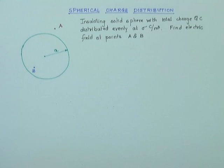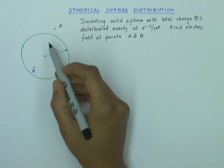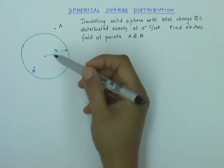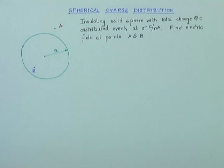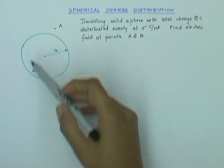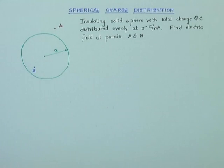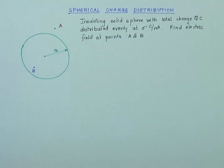In this problem we are given an insulating sphere with total charge Q coulombs. Because the sphere is an insulating sphere, we can say that the charge is distributed uniformly through the volume of the sphere, and we want to find out the electric fields at points A and B.